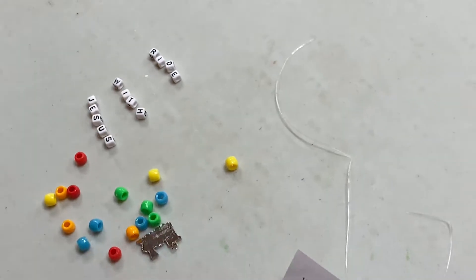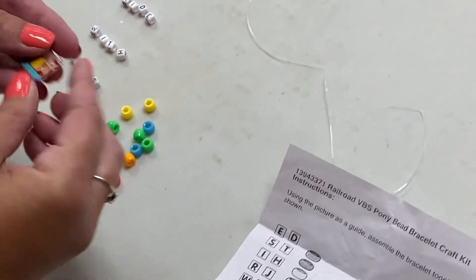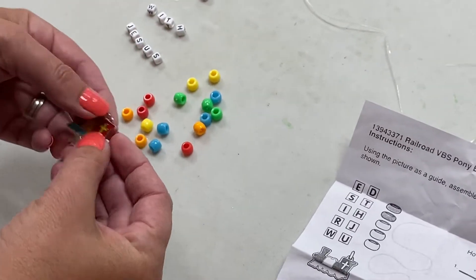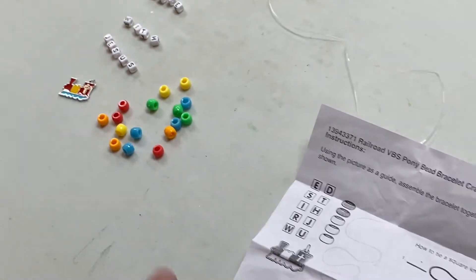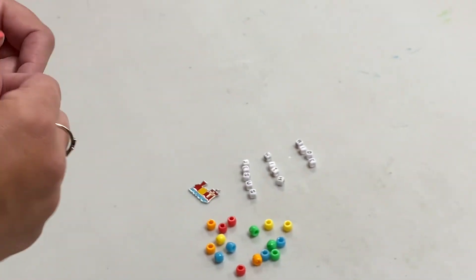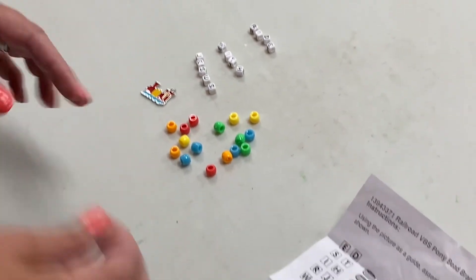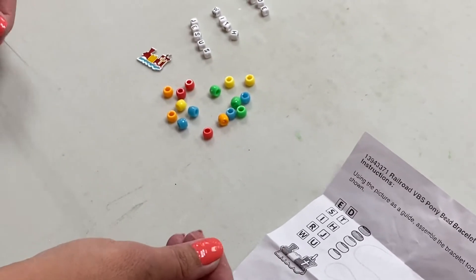All right, we got our 'Ride with Jesus' and we got all sorts of fun colors and then we have our little choo-choo train with a cross. Okay, so the first thing you're going to want to do is watch the end of your bracelet, because if you start putting them in there and you don't watch the end, they'll all fall off at the bottom.